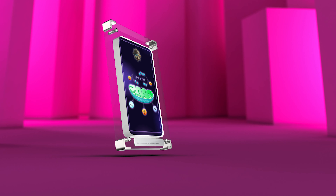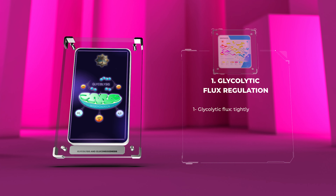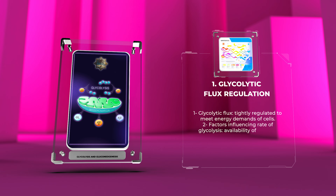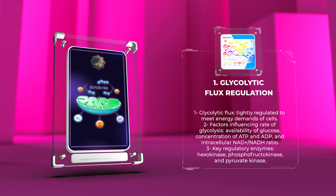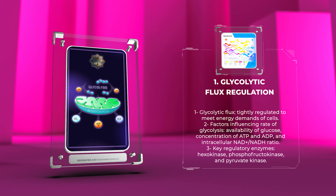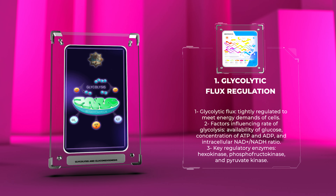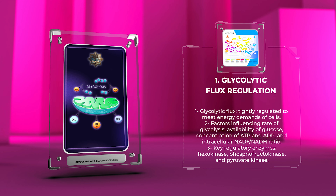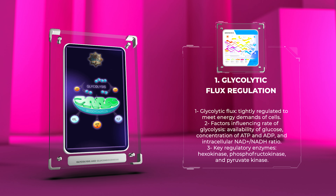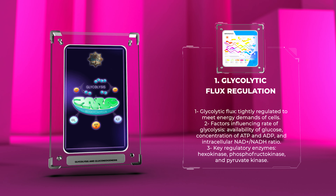Glycolytic flux is tightly regulated to meet the ever-changing energy demands of cells. Various factors such as the availability of glucose, the concentration of ATP and ADP, and the intracellular NAD+ / NADH ratio influence the rate of glycolysis.